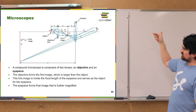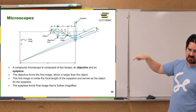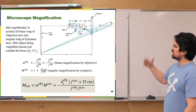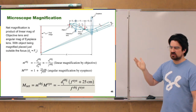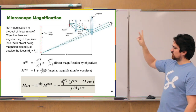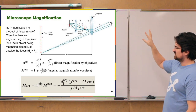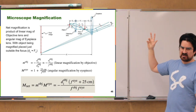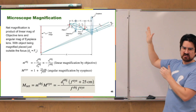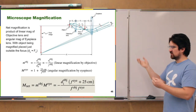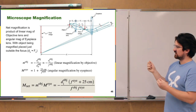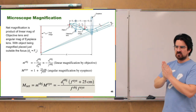The eyepiece is then able to form a much larger image from that intermediate image created by the objective. You see all those rays come together to form this final image that's much larger than the original one. The eyepiece is essentially acting as a magnifying glass — a simple magnifier — to the image that the objective formed.